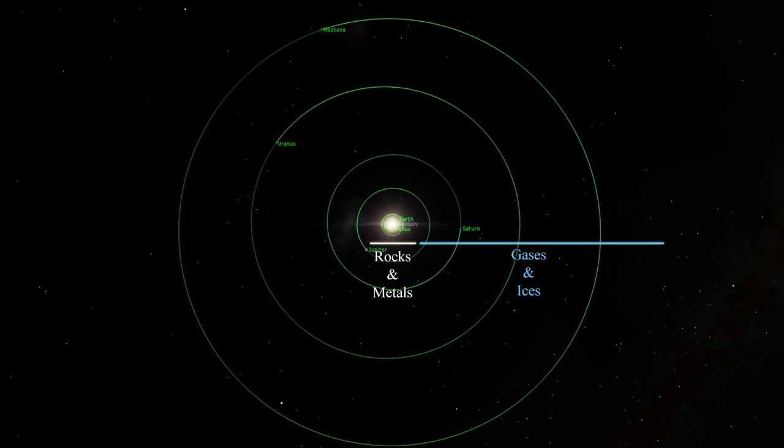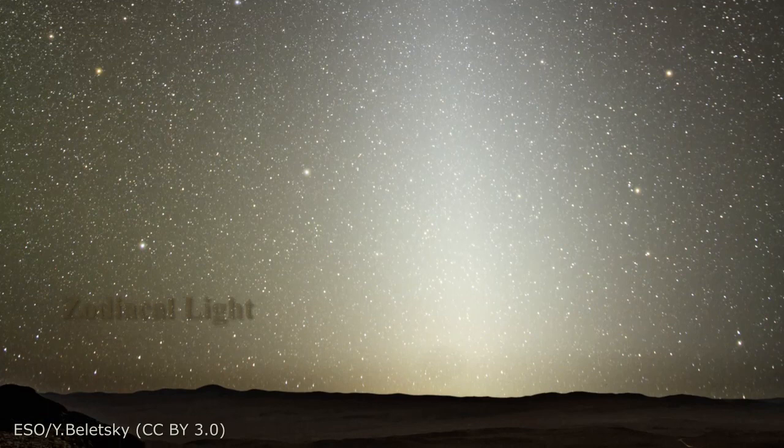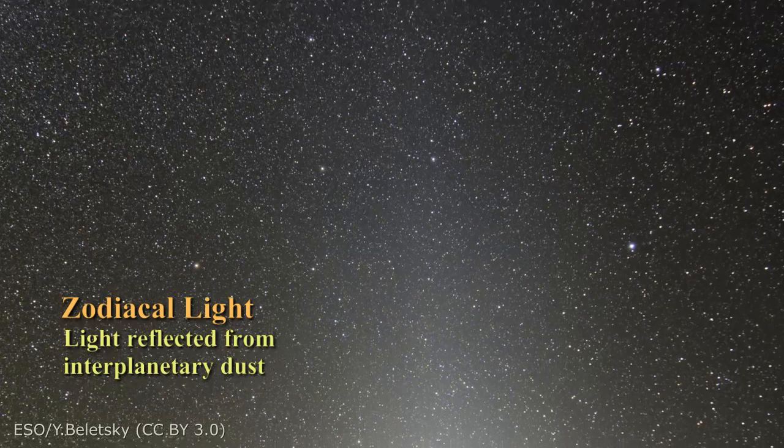There is still dust left over from the formation of the solar system too. If you live in an area with very dark skies you can see this dust strewn along the line of the ecliptic, reflecting sunlight after sunset or before sunrise. This is the zodiacal light.